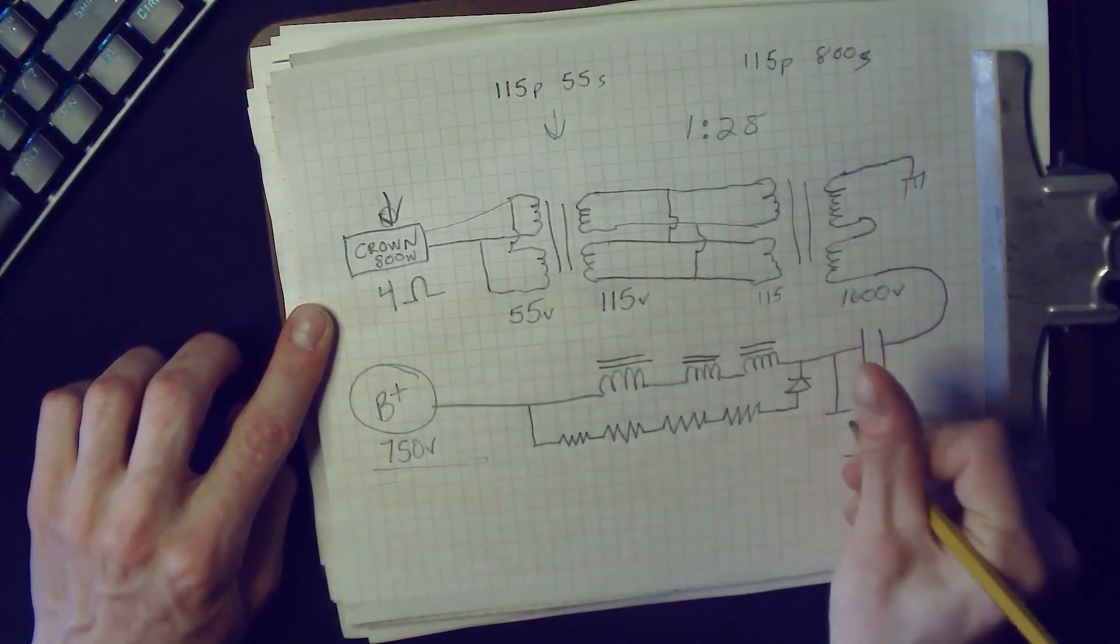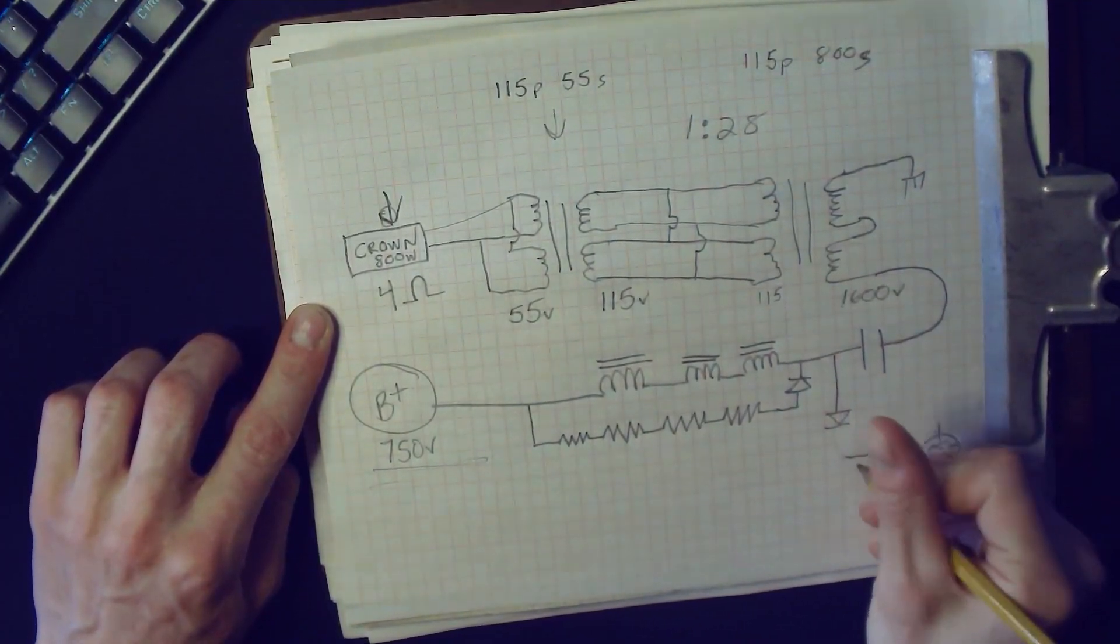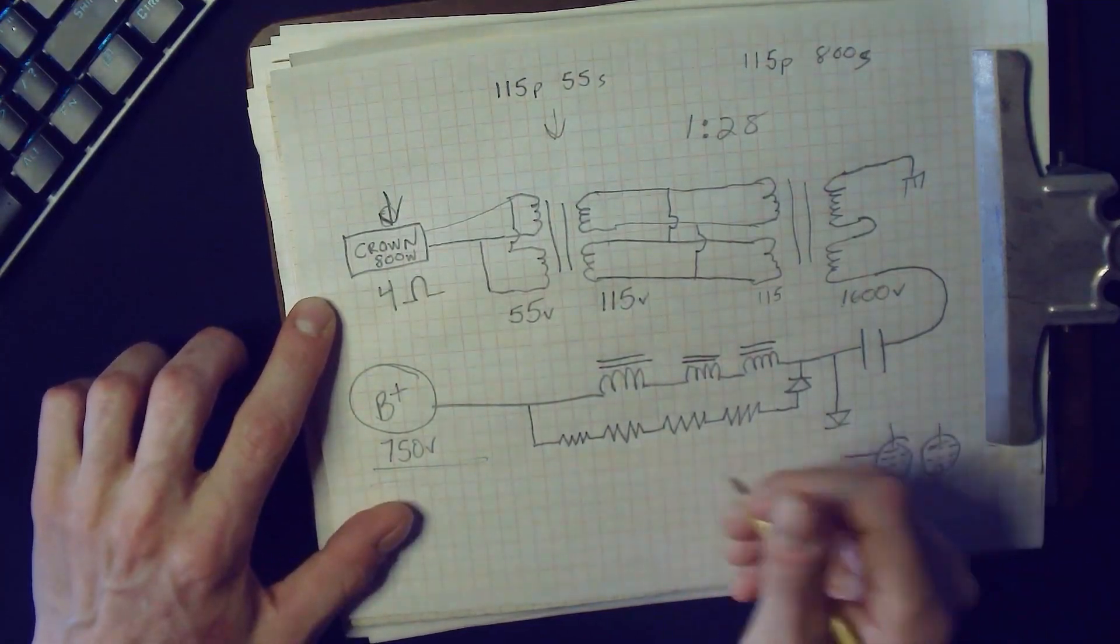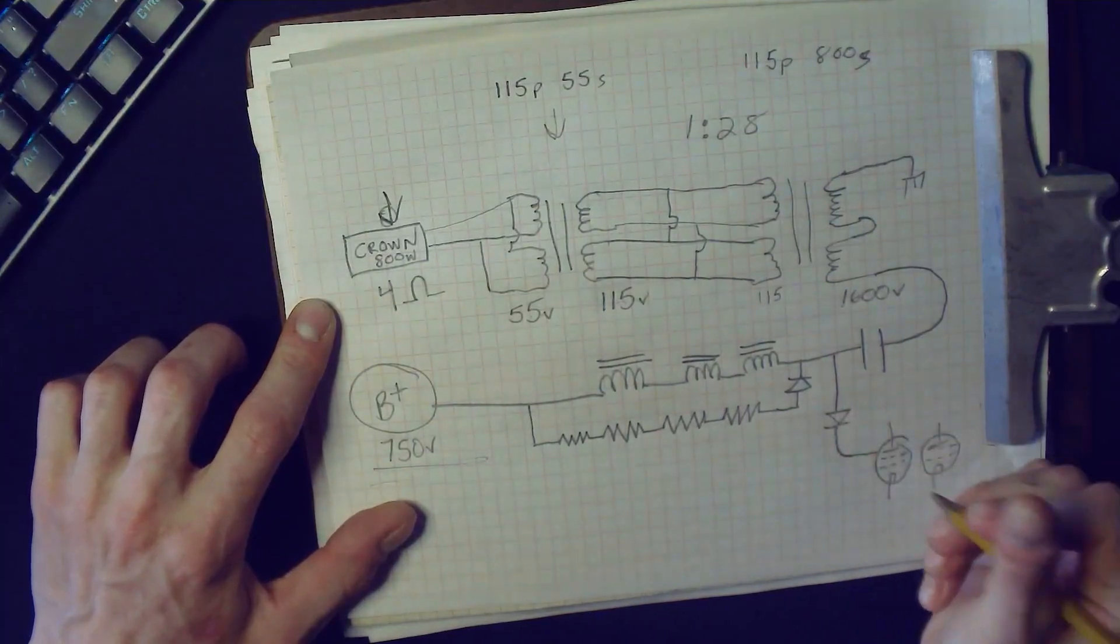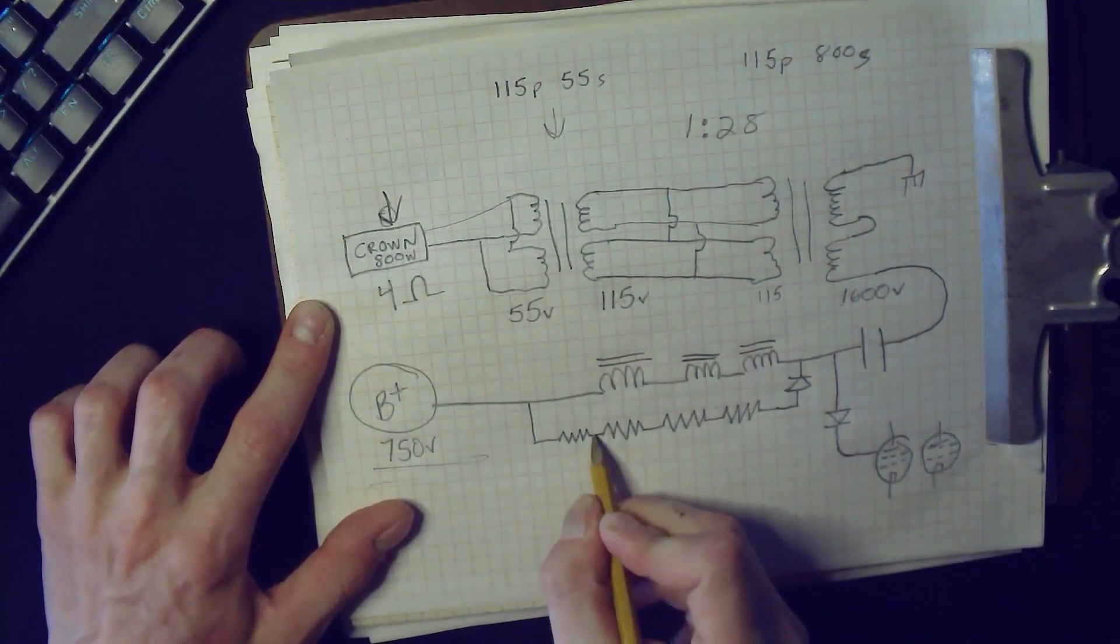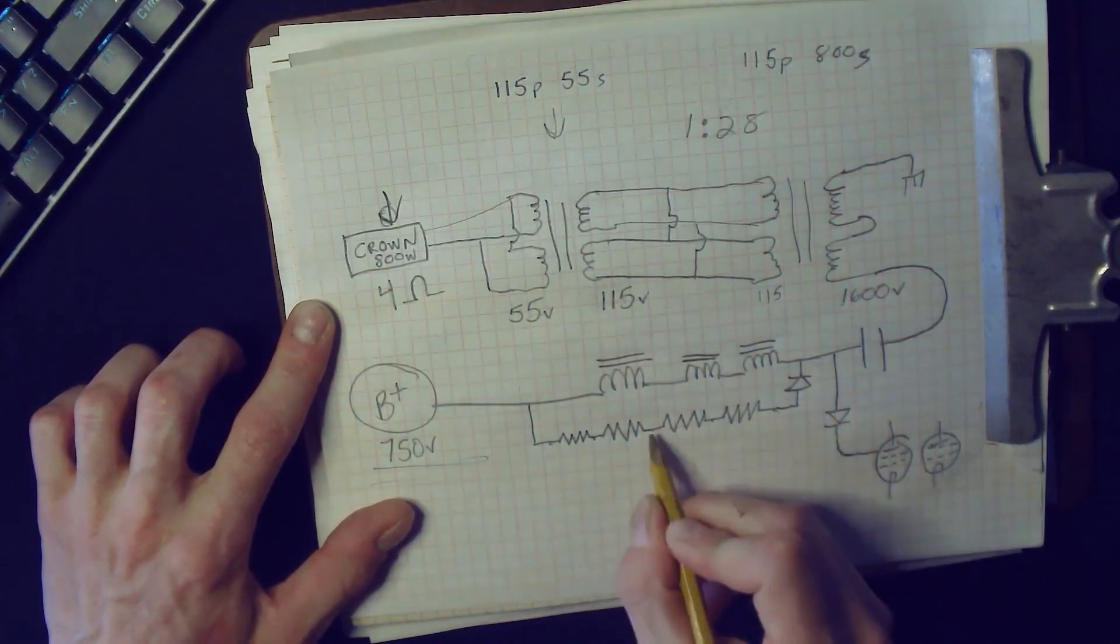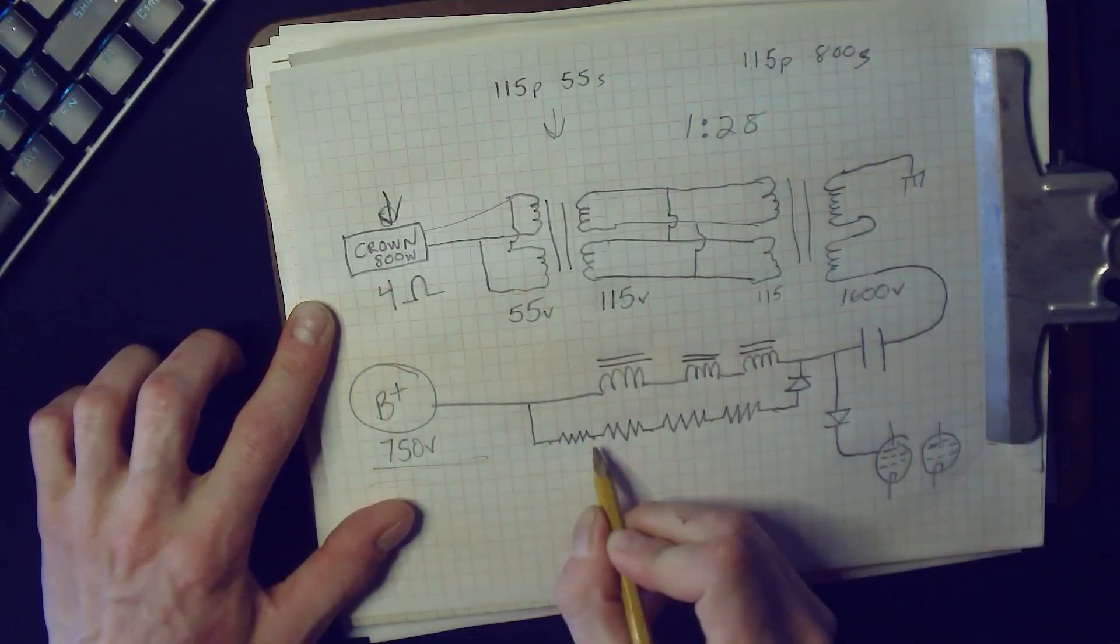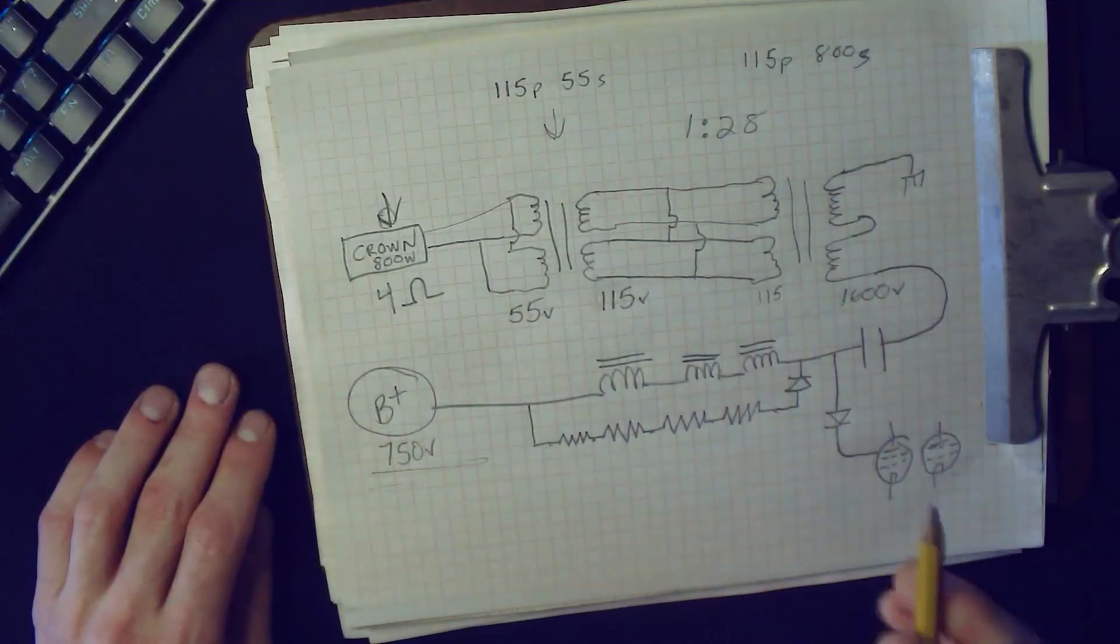They make TO-220 case Schottky diodes with about a 1 kilovolt PIV rating. You can get them on Mouser. I put a bunch of them in series, so every time I draw one of these, imagine five, six, seven, eight, however many diodes you want in series. That's just to handle extra voltage. We're going to add that. We're going to add another diode here.